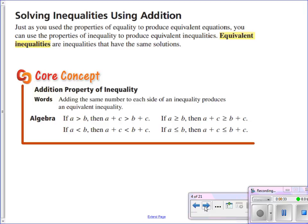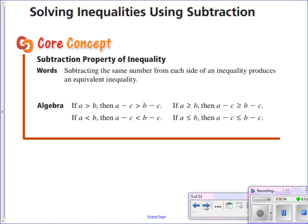The first property that we're going to cover here is solving inequalities using addition. So what they're saying is if I have an inequality and I add the same number to each side, then it does produce an equivalent inequality. In other words, it keeps that inequality balanced. Likewise, if I subtract the same thing from both sides, just like I would with an equation, it keeps the inequality balanced and makes an equivalent one.